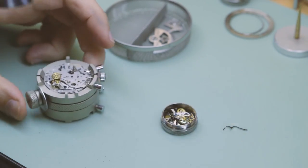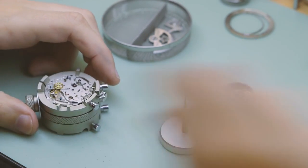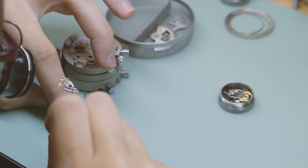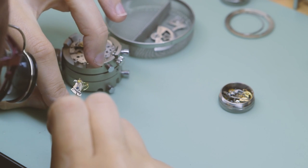Once the shock has been absorbed the spring's elastic properties will mean it will want to return to its original shape and by doing so will push the chaton and capstone back downwards.